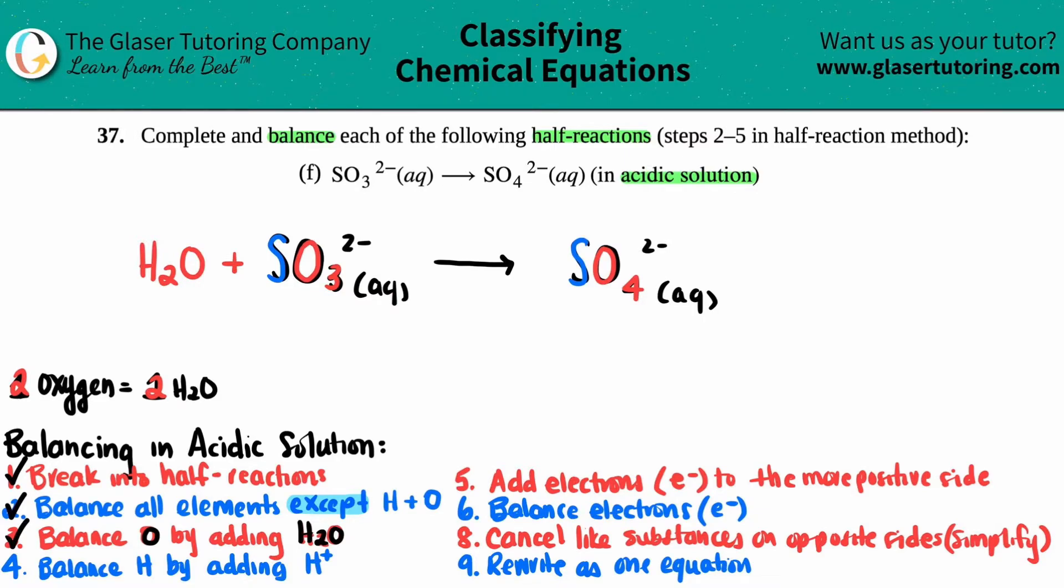Now we go to step four. We balance hydrogen by adding H plus. This is the same exact idea. If you need to add one hydrogen, you're going to add one H plus. Two hydrogens you need, you need to add two H pluses. So let's see. On my reactant side, I have hydrogen here, and I have two of them. No hydrogen on my product side. So if I have two on this side, I need to add two H plus. Not bad.